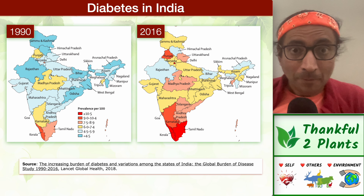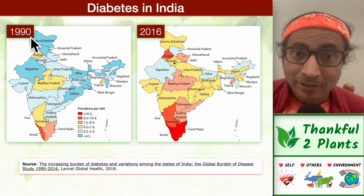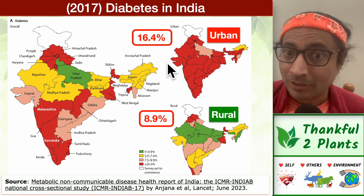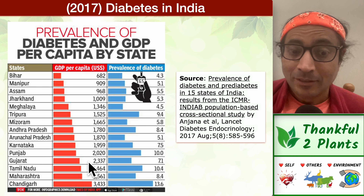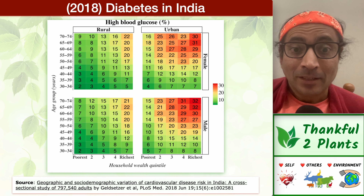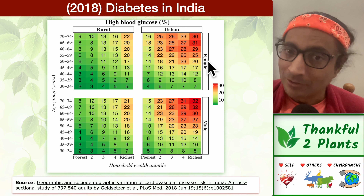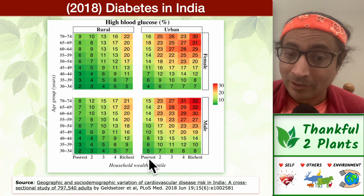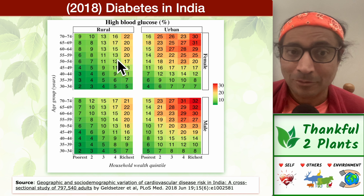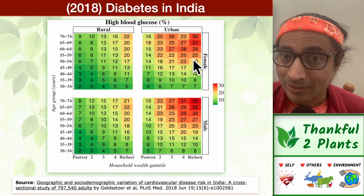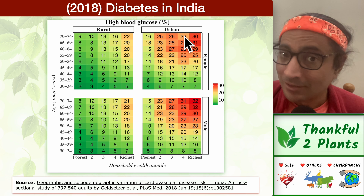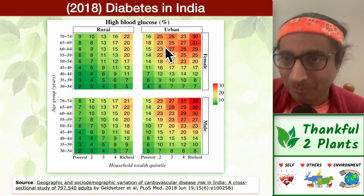Let's look at diabetes now. Diabetes in India is on the rise — from 1990 to 2016 we can see it increasing. Rural versus urban population: much more in urban areas, across all of India. As the GDP of a state increases, the prevalence of diabetes seems to be increasing. Detailed data comparing rural versus urban, males and females, different age groups, and poorest versus richest in five buckets — consistently, richer people and urban people have higher rates of high blood glucose.